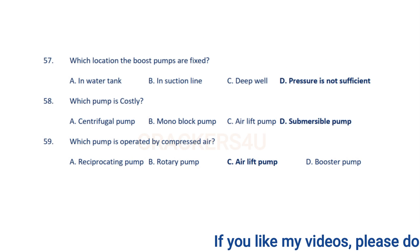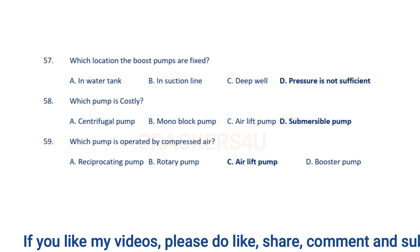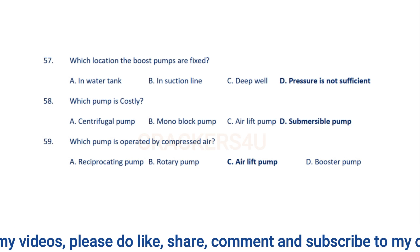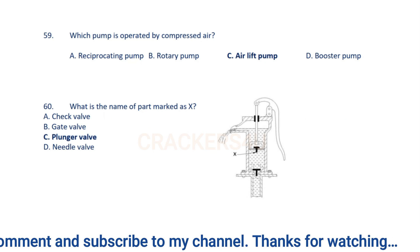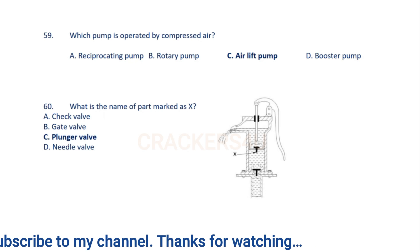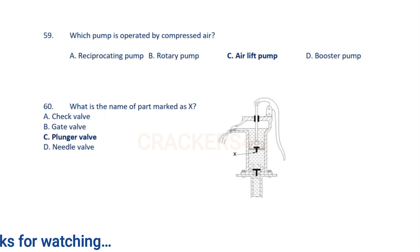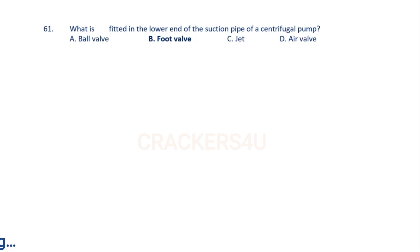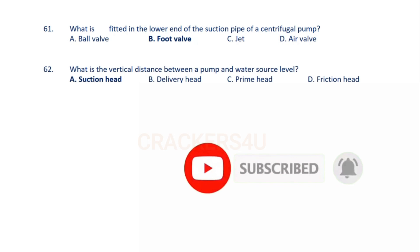Question 59: Which pump is operated by compressed air? Answer: Air lift pump. Question 60: What is the name of the part marked X? Answer: Plunger valve. Question 61: What is fitted in the lower end of the suction pipe of a centrifugal pump? Answer: Foot valve.